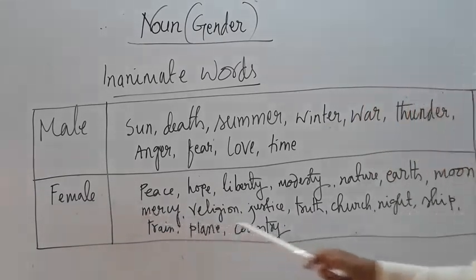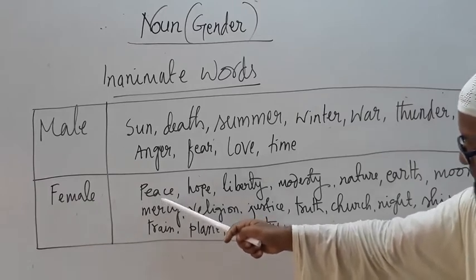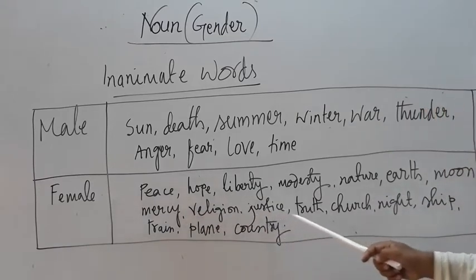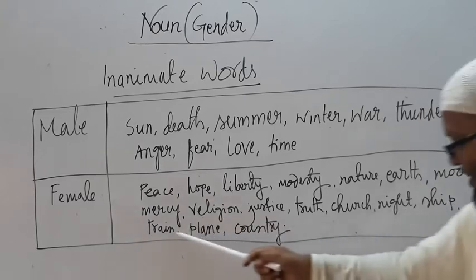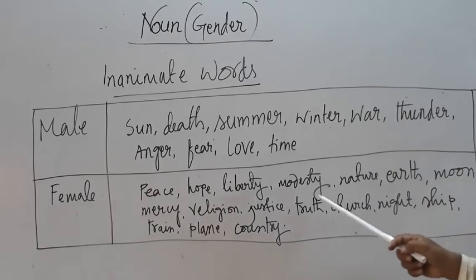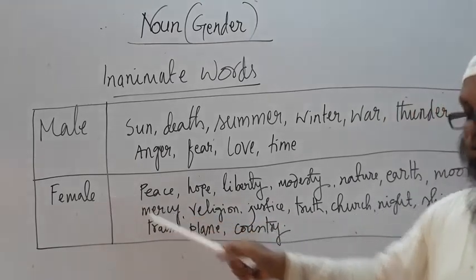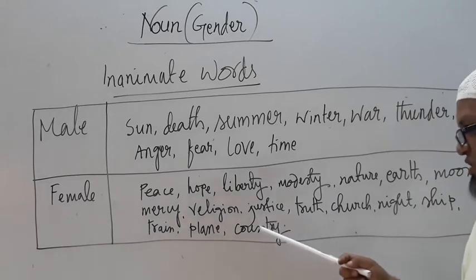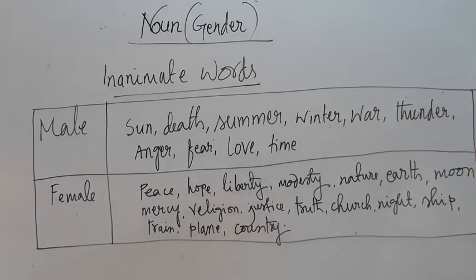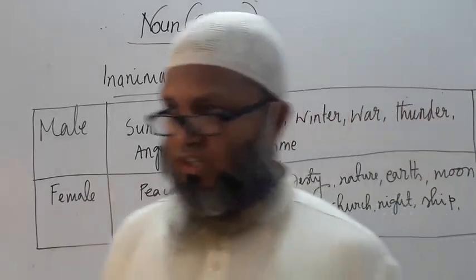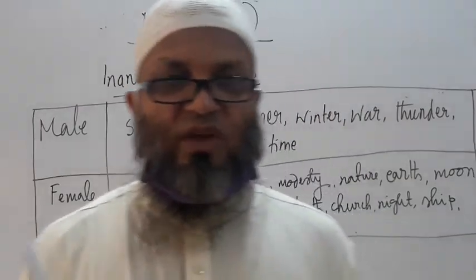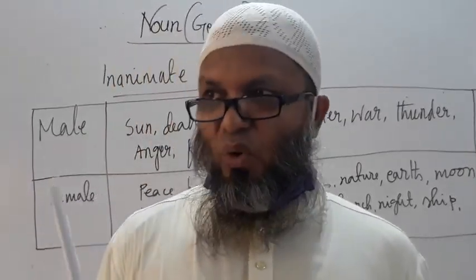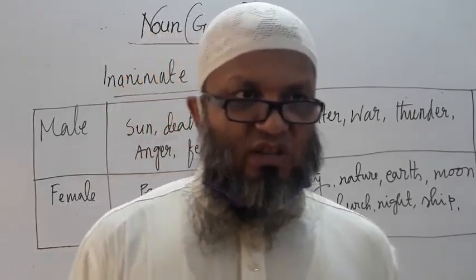And the feminine inanimate words are: peace, hope, liberty, modesty, nature, art, moon, mercy, religion, justice, truth, church, night, sheep, train, play. Those are the words which are used with feminine feeling. If you know those words they will help you a lot. Try to know the meaning, pronunciation, and other word forms side by side. Learning these words will help you in gap-filling exercises, and your stock of words will be increased. The more you enrich your vocabulary, the more English will be easy for you.